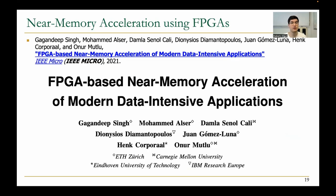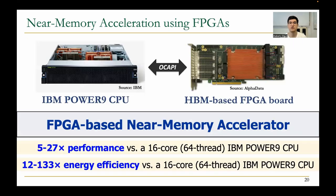Another work published in IEEE Micro 2021 showed that near-memory processing enabled by FPGAs can accelerate genomics and climate modeling computations. This system enabled 5 to 27 times performance improvement and 12 to 133 times energy efficiency improvement compared to a 16-core computer.